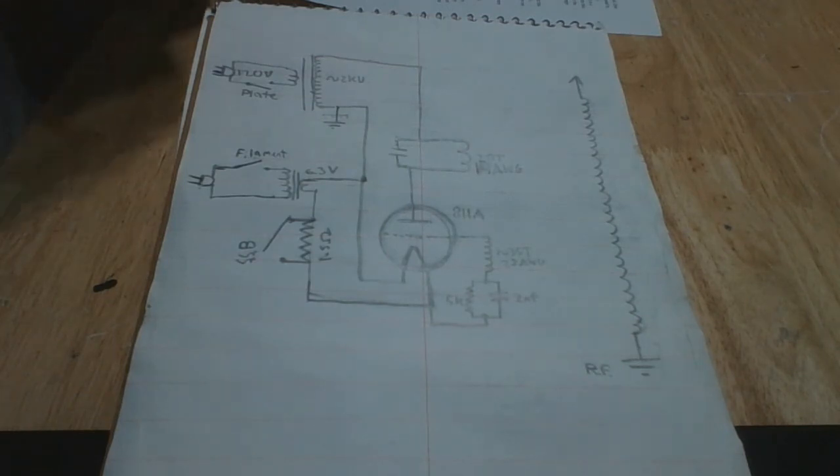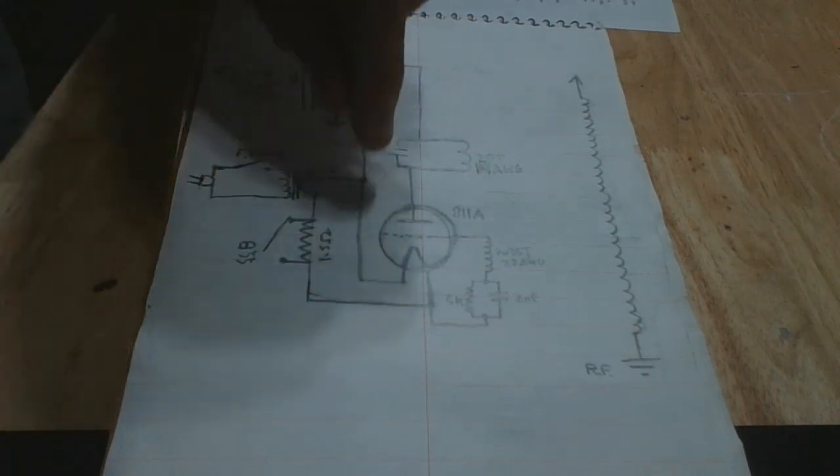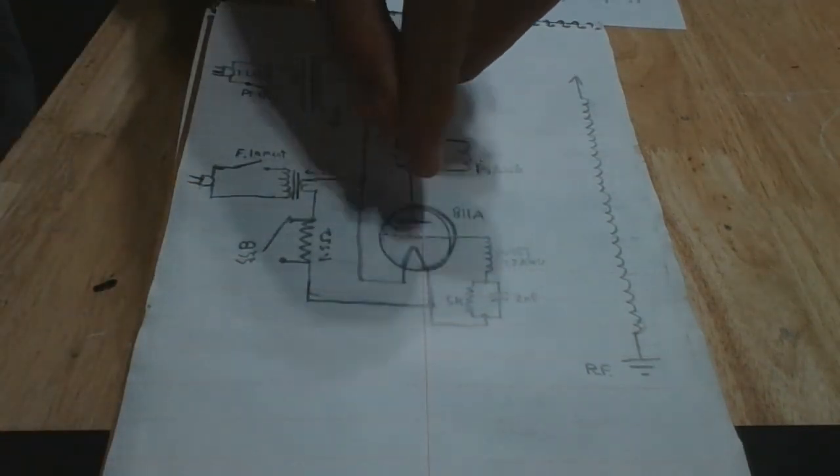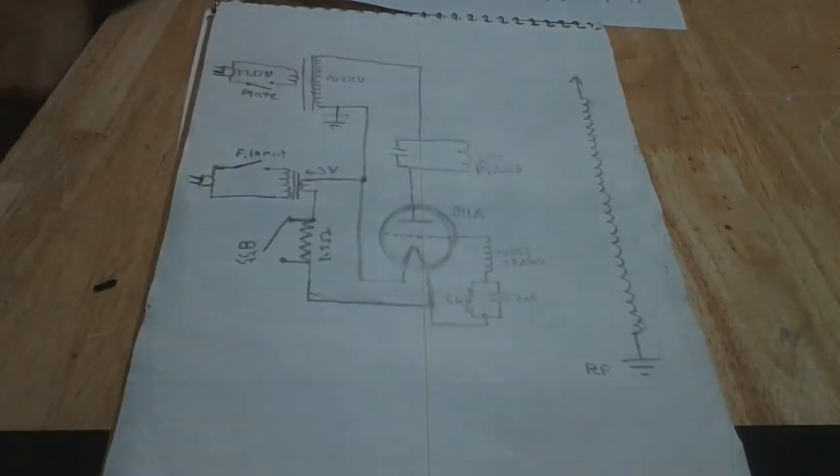Which means that the vacuum tube will conduct once more and current will once again flow through the primary coil, repeating the cycle over and over again, hundreds of times a second. This, due to the high turns ratio, causes a very high voltage on the secondary coil.